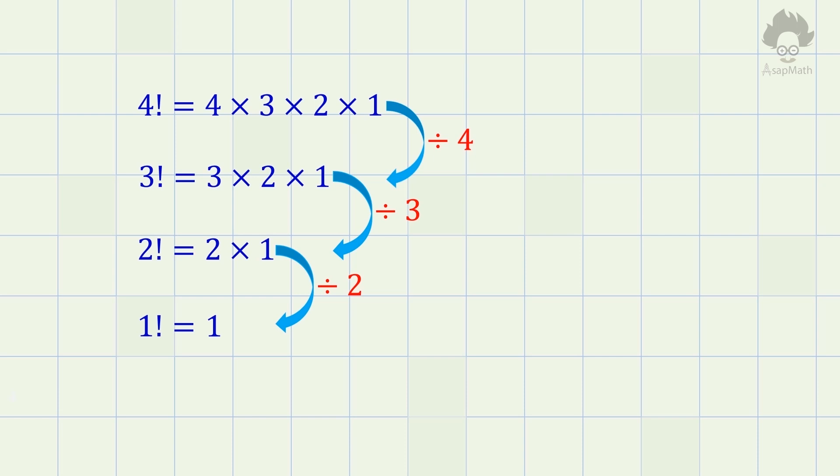So now, the final step is to find the factorial of 0. According to the pattern, we can obtain factorial 0 by dividing 1 by 1. The answer is again 1.